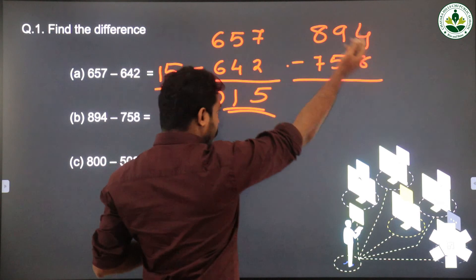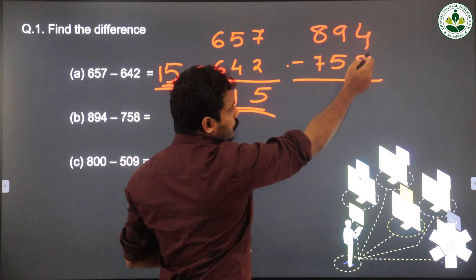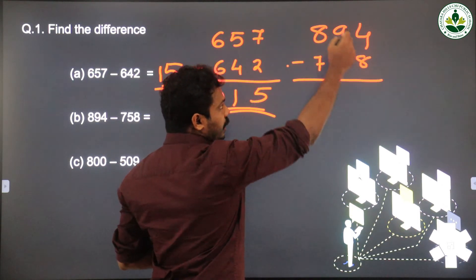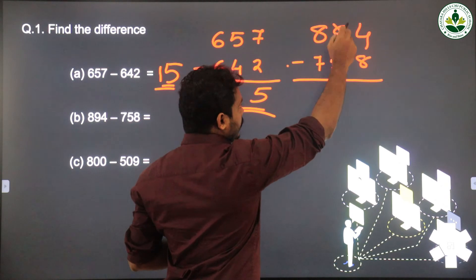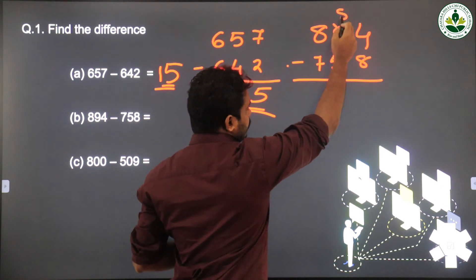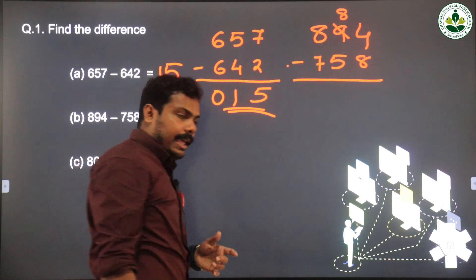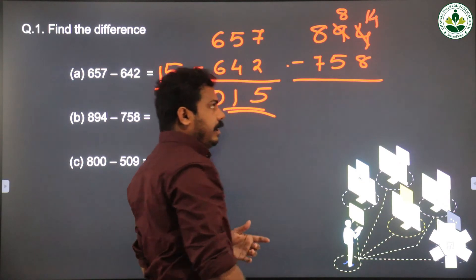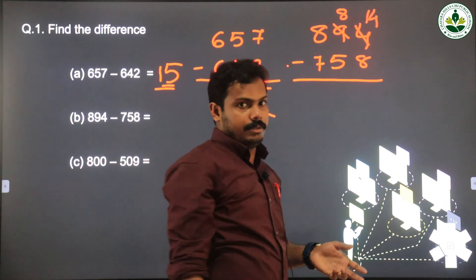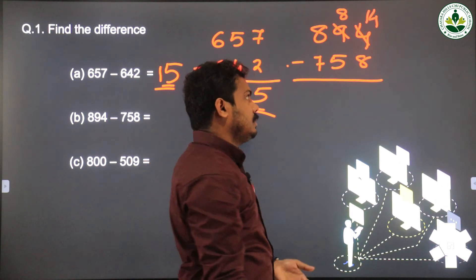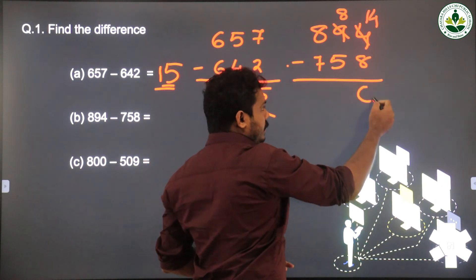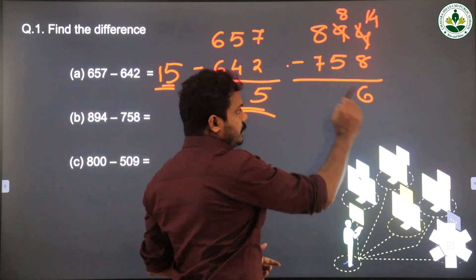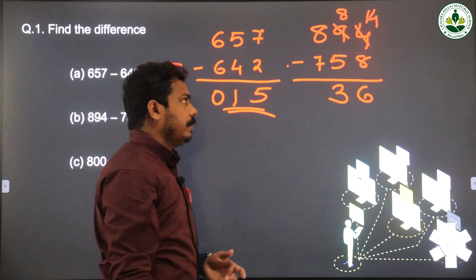894 minus 758. Start from the right-most place. The digits are 4 and 8. We can't subtract 8 from 4, so we take 1 from the next place — the tens place. Then 9 becomes 8, and this 4 becomes 14. 14 minus 8: 8 plus 6 is 14, so 14 minus 8 is 6. Then 8 minus 5 is 3. Then 8 minus 7 is 1.